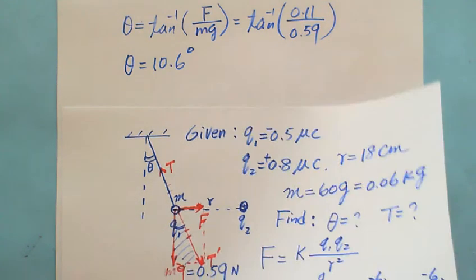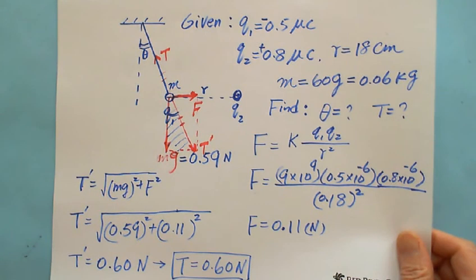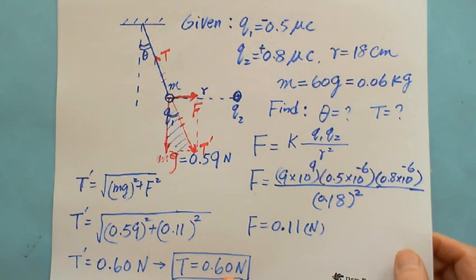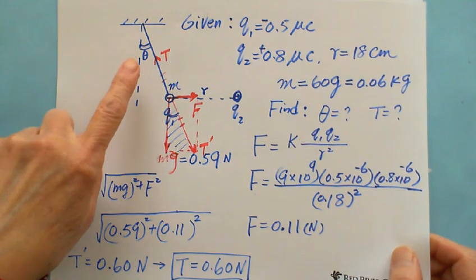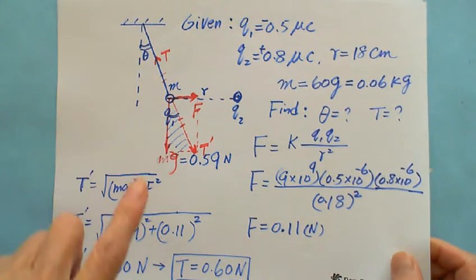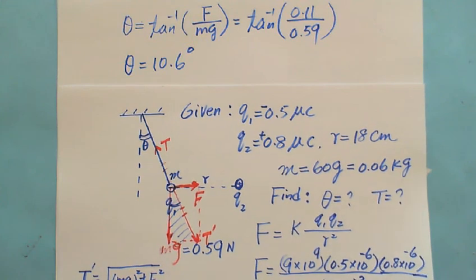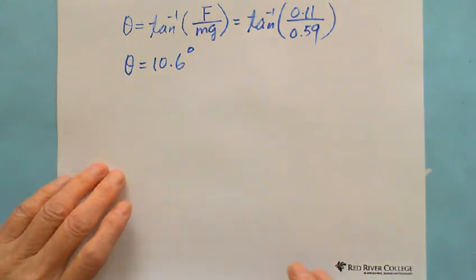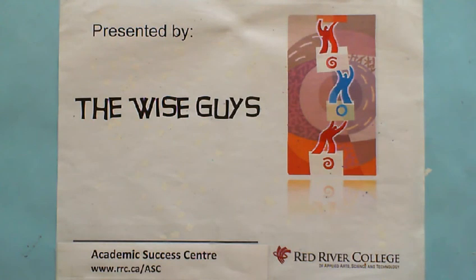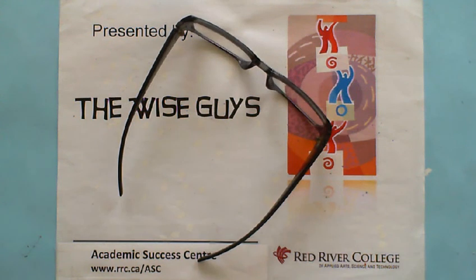So the force equals, the tension force equals 0.6 Newton, and the angle is 10.6 degrees. This is presented by Wiseguys. Thank you.